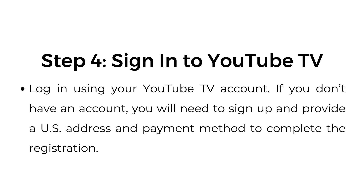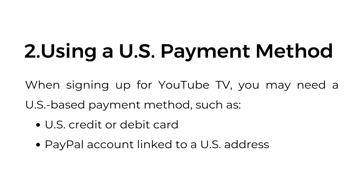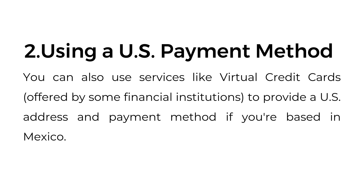If you don't have an account, you will need to sign up and provide a US address and payment method to complete the registration. Number two: using a US payment method. When signing up for YouTube TV, you may need a US-based payment method such as a US credit or debit card, or a PayPal account linked to a US address. You can also use services like virtual credit cards offered by some financial institutions to provide a US address and payment method if you're based in Mexico.